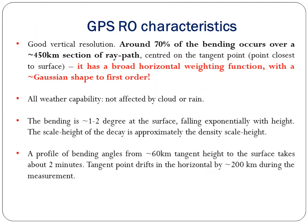The GPS RO characteristics include good vertical resolution: around 70% of the bending occurs over approximately 450 km of ray path, centred on the tangent point, which is the point closest to the surface. It has a broad horizontal weighting function with a Gaussian shape. It also has all-weather capability — not affected by cloud, rain, or fog. The bending is approximately 1 to 2 degrees at the surface, falling exponentially with height, with a scale height of decay approximately equal to the density scale height. A profile of bending angles from about 60 km tangent height to the surface takes about 2 minutes, with the tangent point drifting approximately 200 km horizontally during measurement.